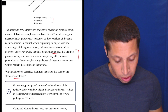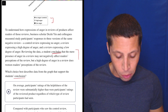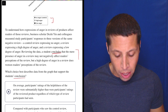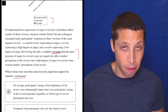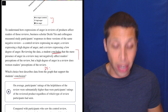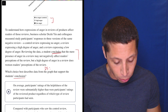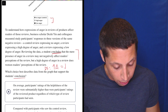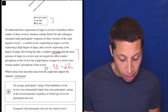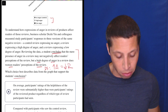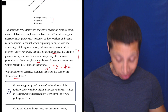A student concludes that the mere presence of anger in a review may not negatively affect readers' perceptions of the review, but a high degree of anger in a review does worsen readers' perceptions of the review. That's easy to summarize: increase of anger equals worse review. High degree of anger worsens perceptions. Let's just stick with that.